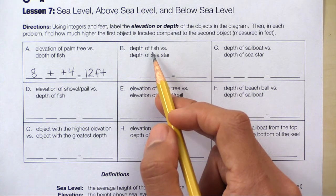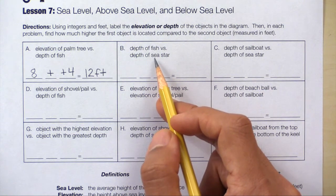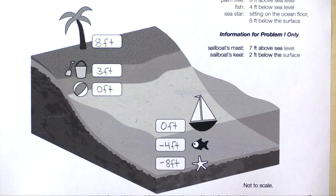Let's take a look at box B. Depth of fish versus depth of sea star. So we need to find the difference between the fish and the sea star. Negative 4 minus negative 8.